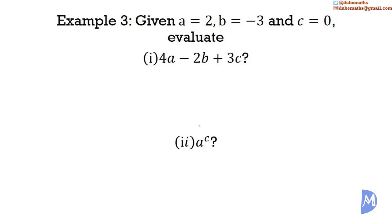A third example. Given a is equal to 2, b is equal to negative 3, and c is equal to 0, evaluate part 1: 4a minus 2b plus 3c. Wherever we see a, we substitute with 2; wherever we see b, we substitute with negative 3; and wherever we see c, we substitute with 0. So we get 4 multiplied by 2.